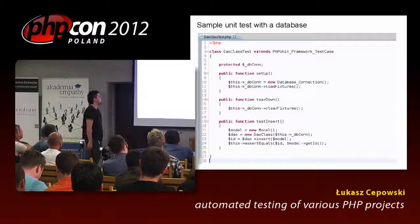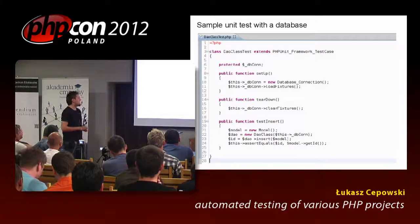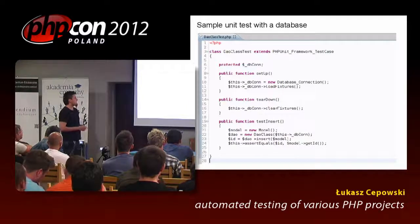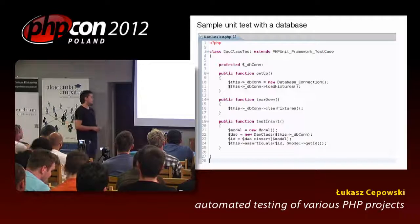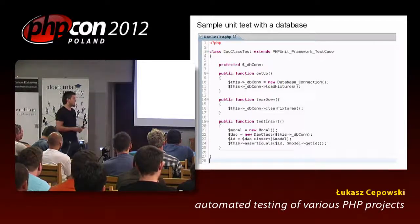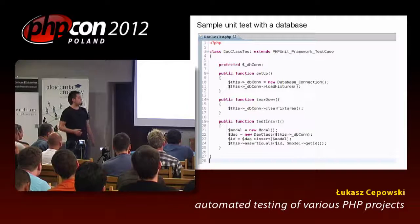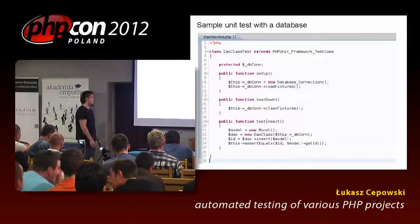This is a simple test with the database — just an example, not a framework. When you are doing tests with a database, you create an instance of a model — you probably have something like a DAO class or Doctrine as a mapper for database operations. What is important with database tests is that you will most likely need some kind of fixtures loaded before your test runs. The setup method is executed before test cases run, so you can load and then clear the fixtures.